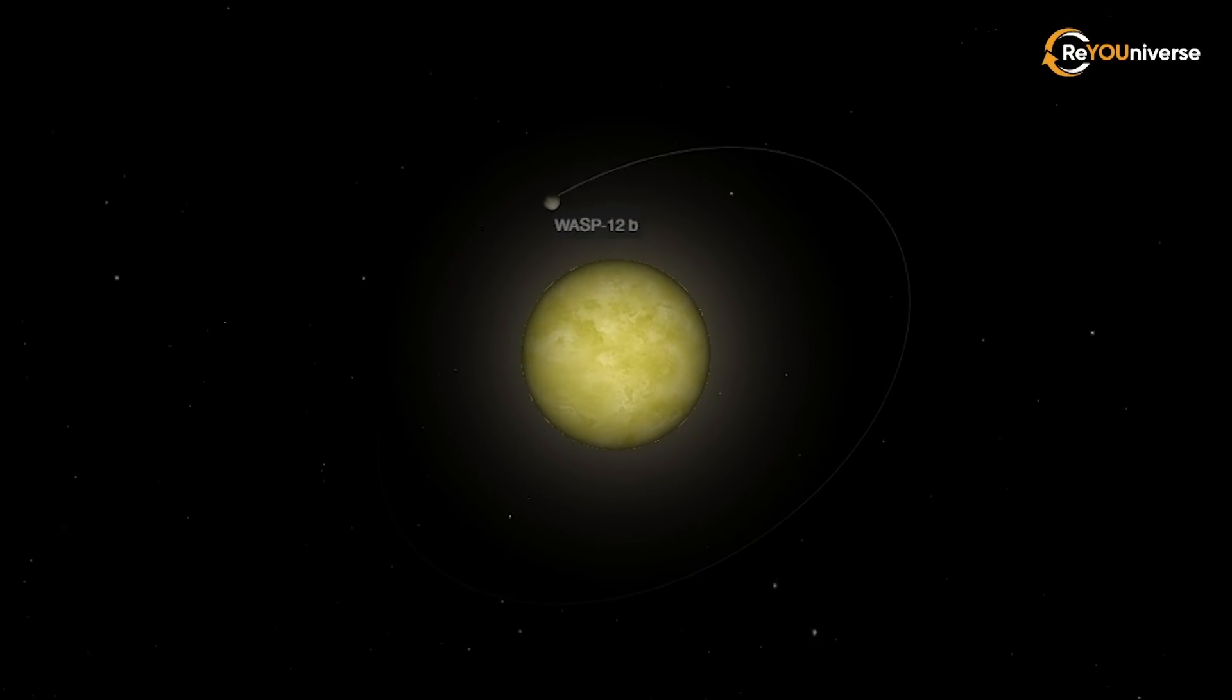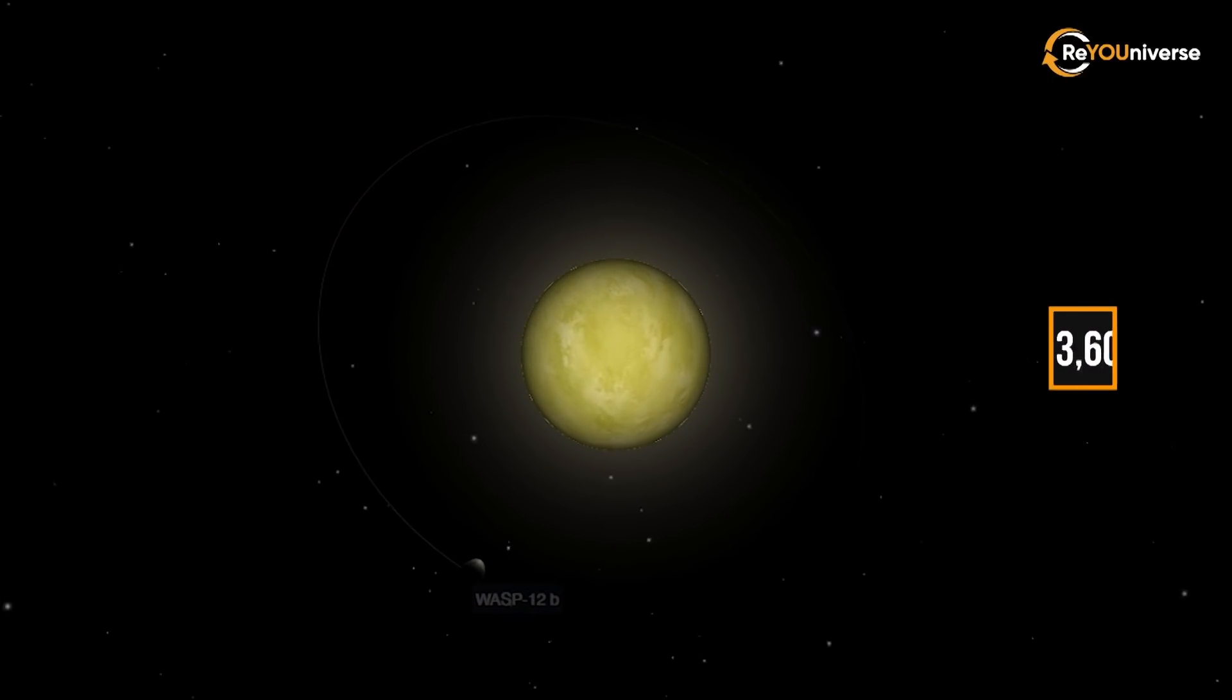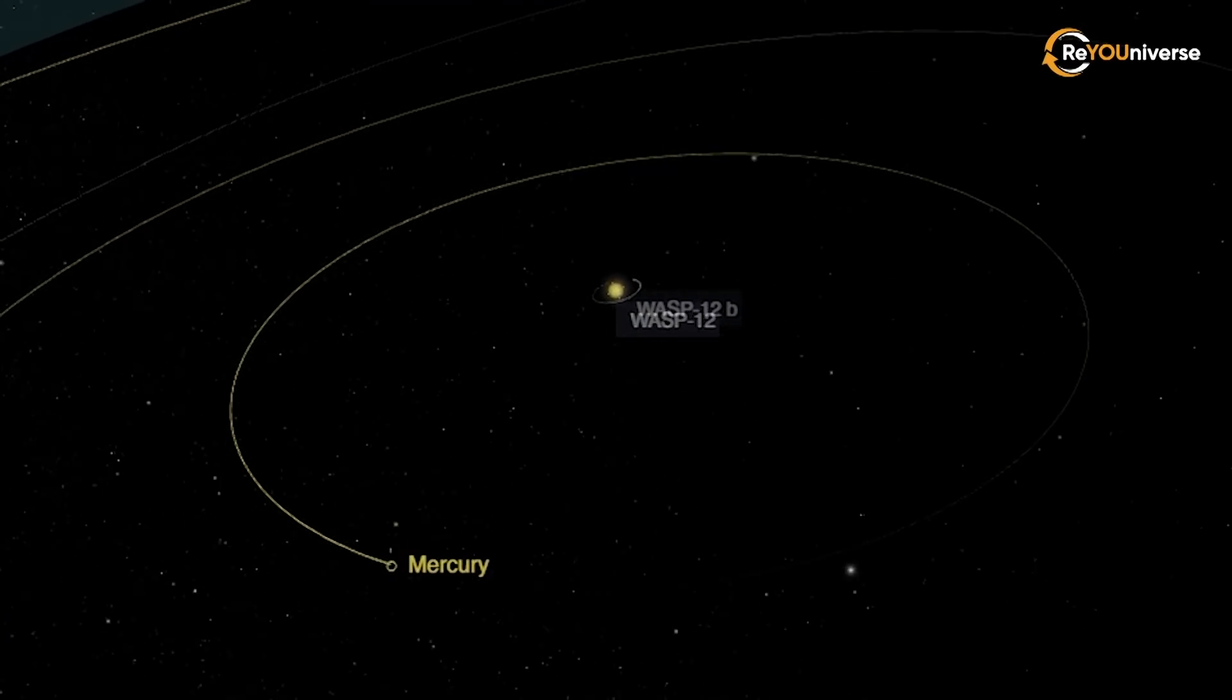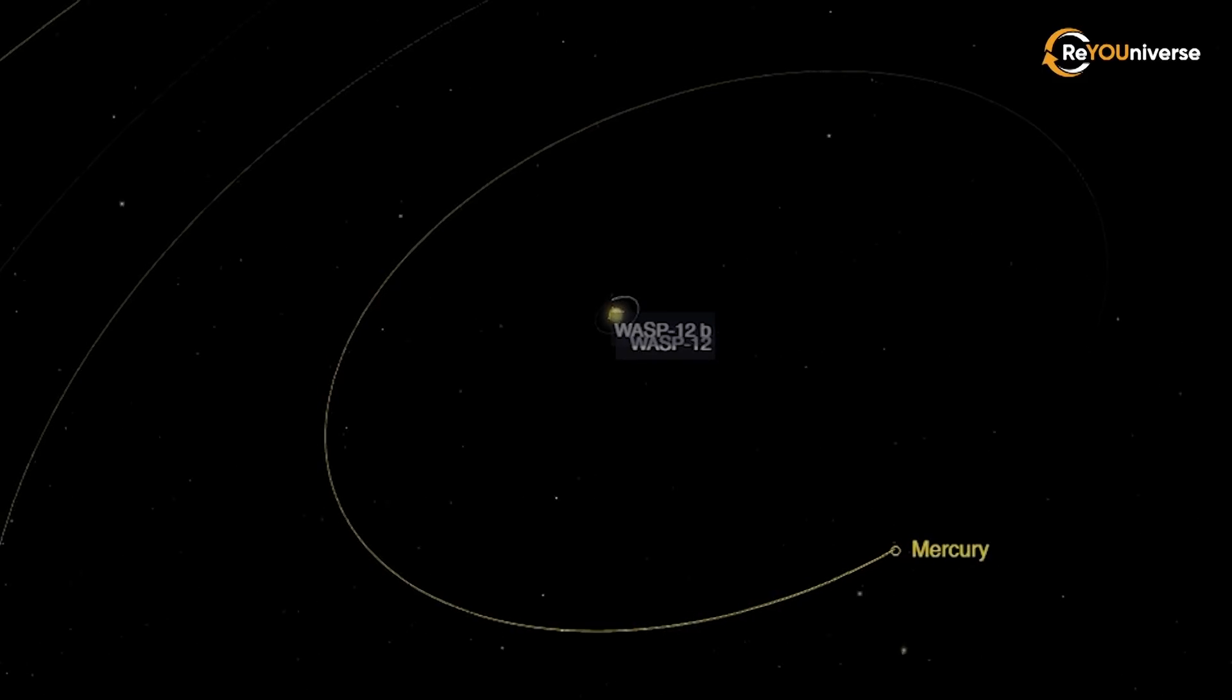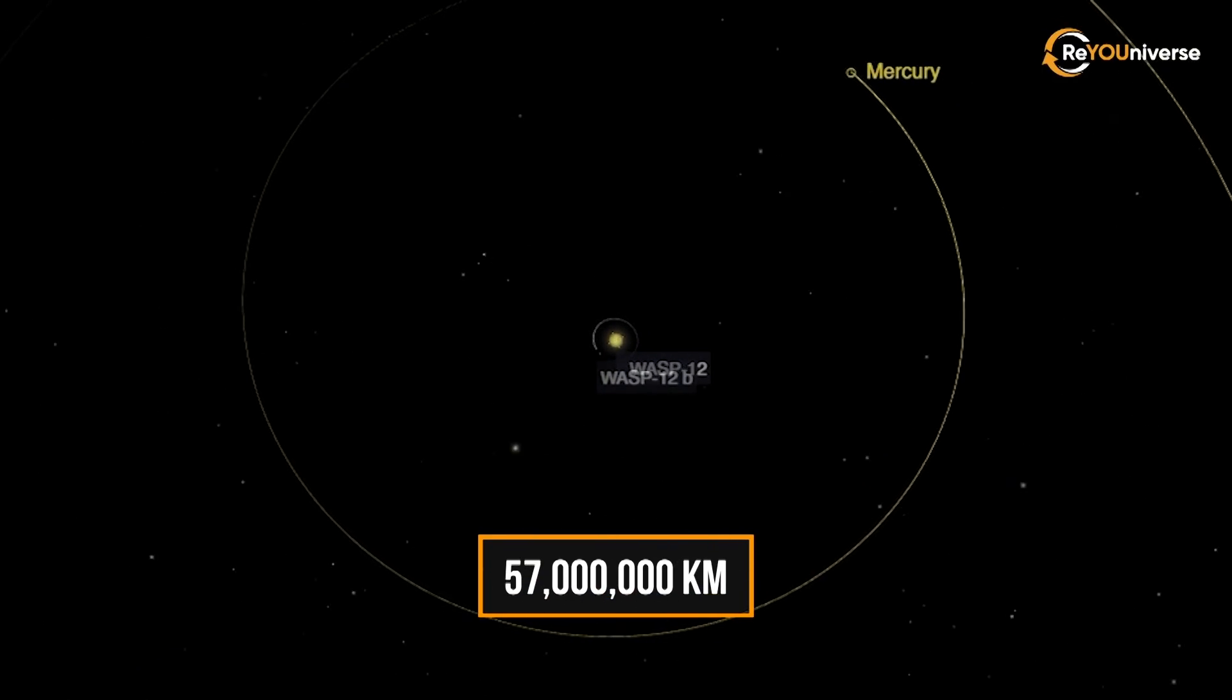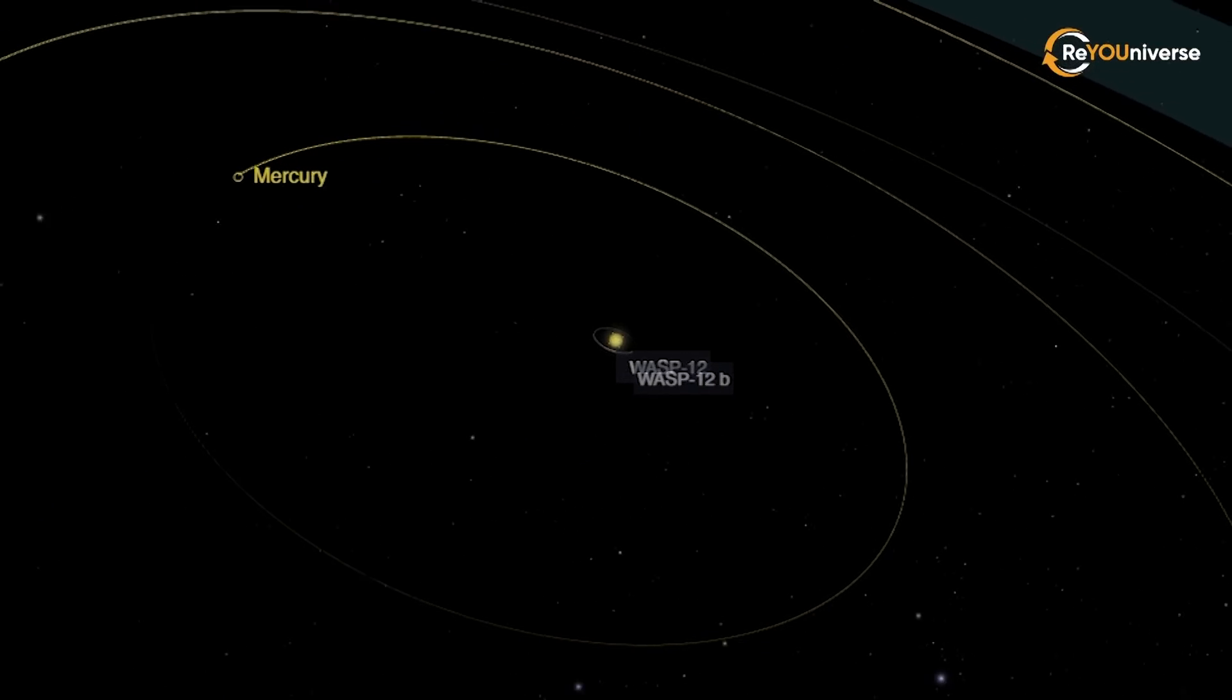The planet is about 3.6 million kilometers away from its parent star. To get a feel for this distance, let's see how close Mercury is to our Sun. The average distance from Mercury to the Sun is 57 million kilometers. That is almost 16 times the distance from WASP-12b to its star.